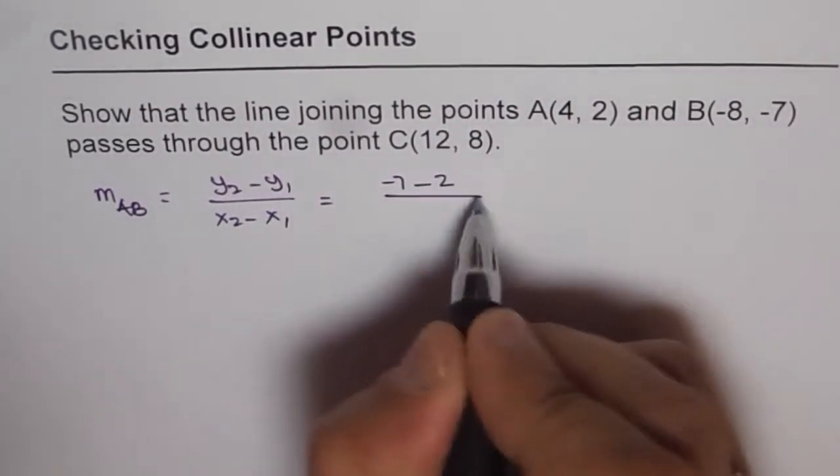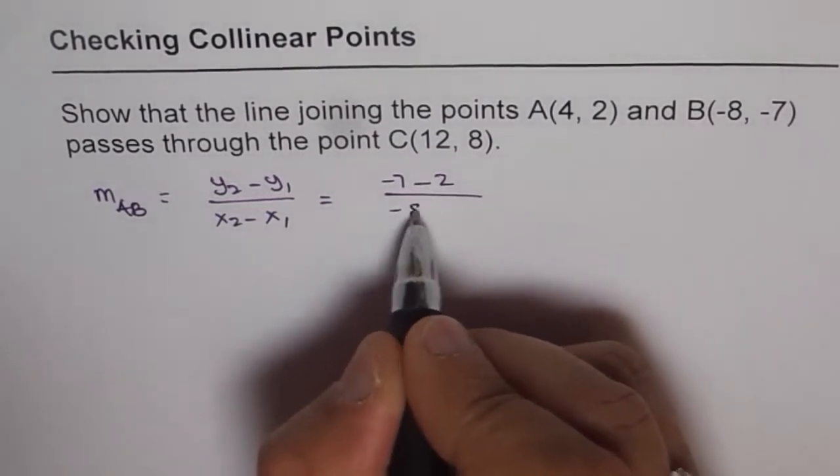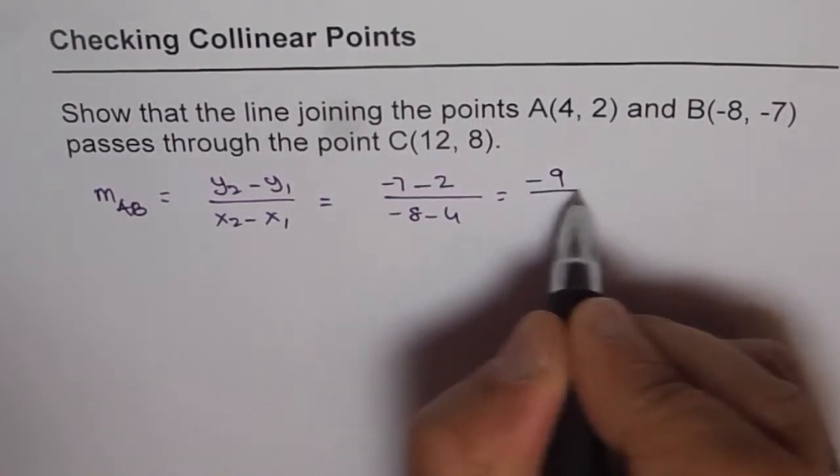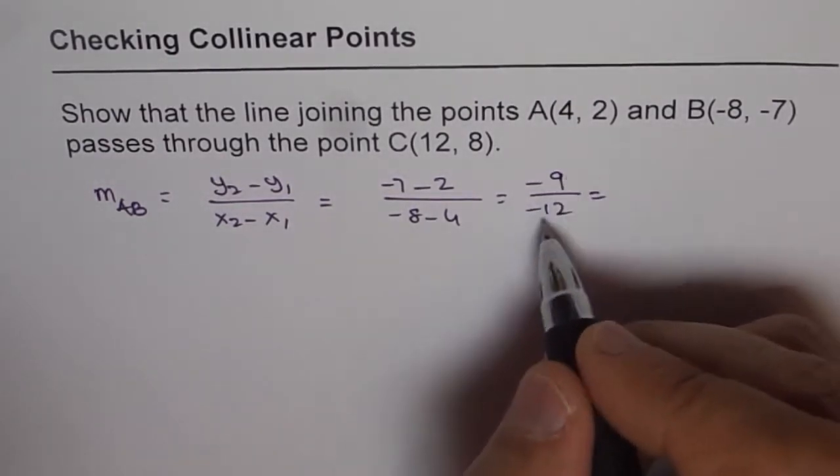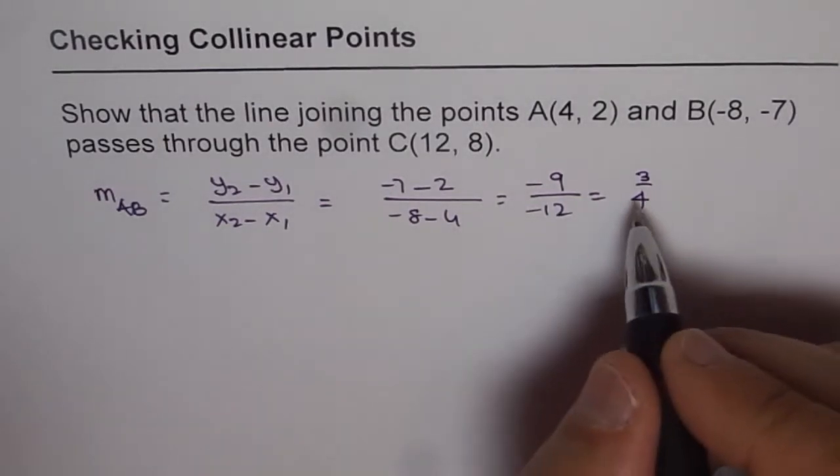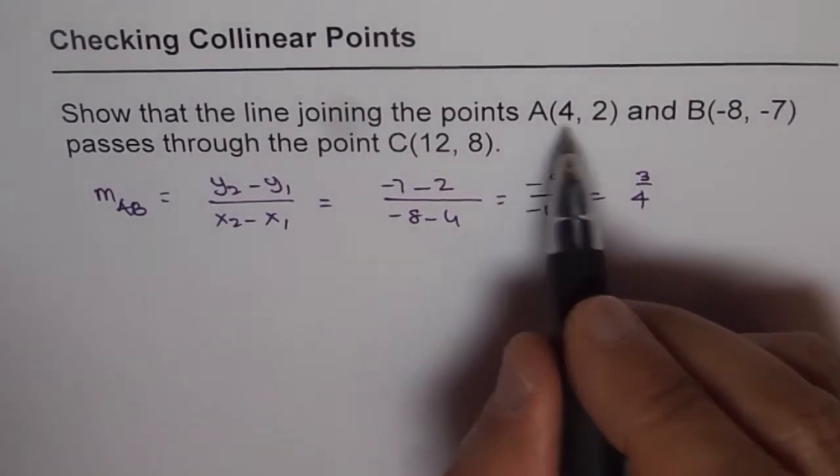minus 2, and x2 is -8, x1 is 4. So we get -9 over -12, and we can divide both by 3, so we get 3 over 4. So we get a slope of 3/4 between points A and B.